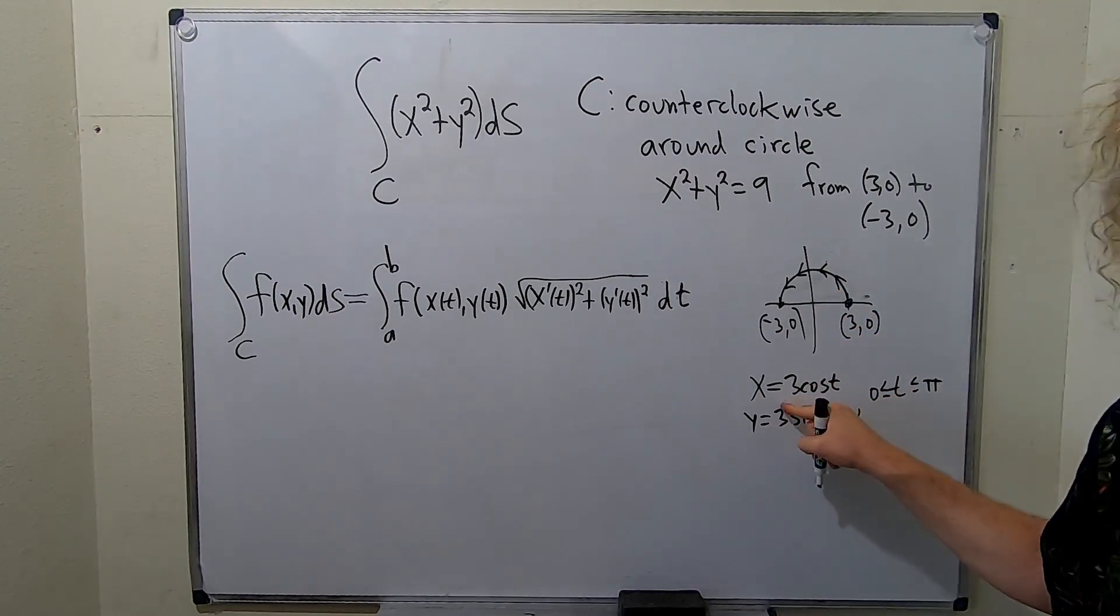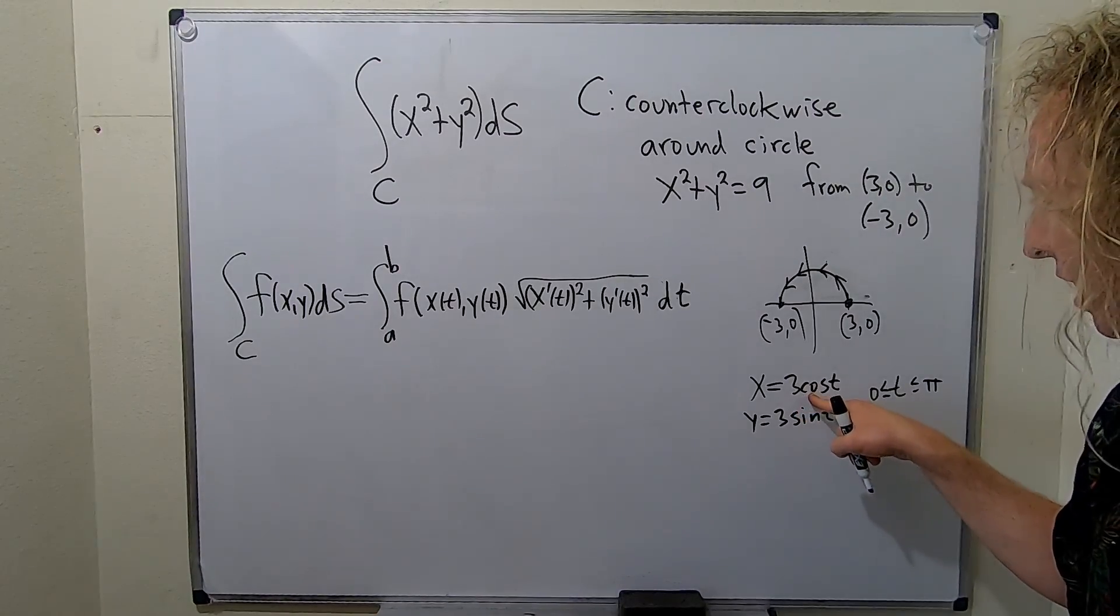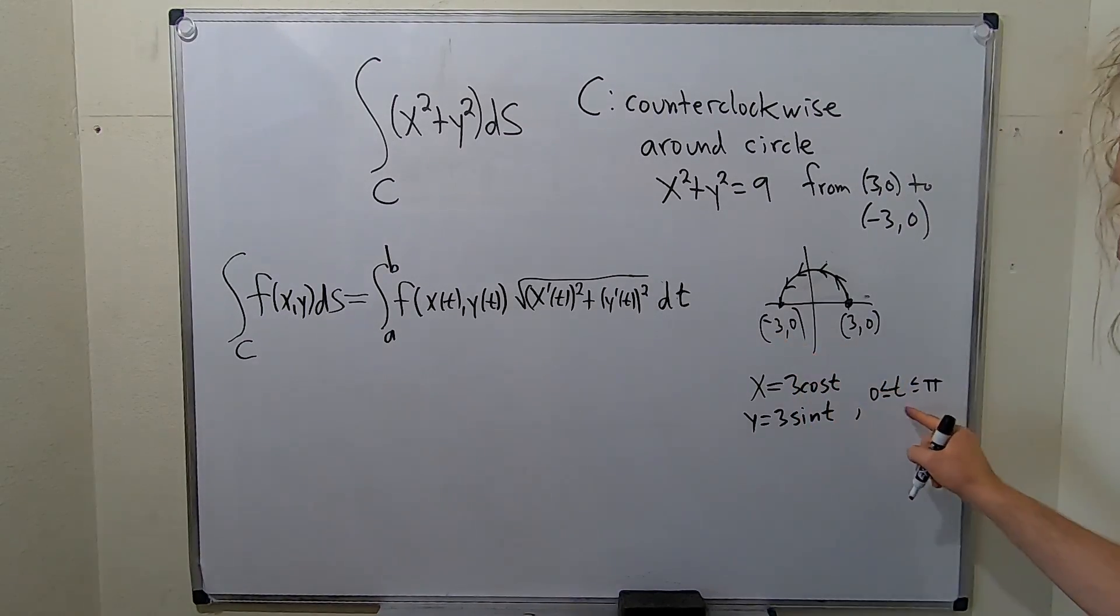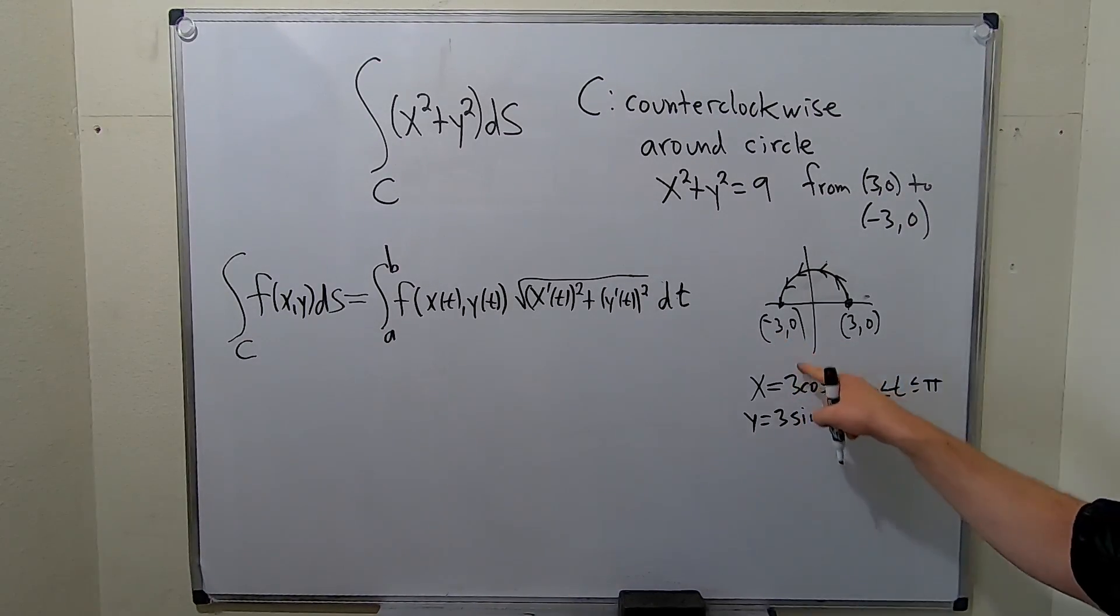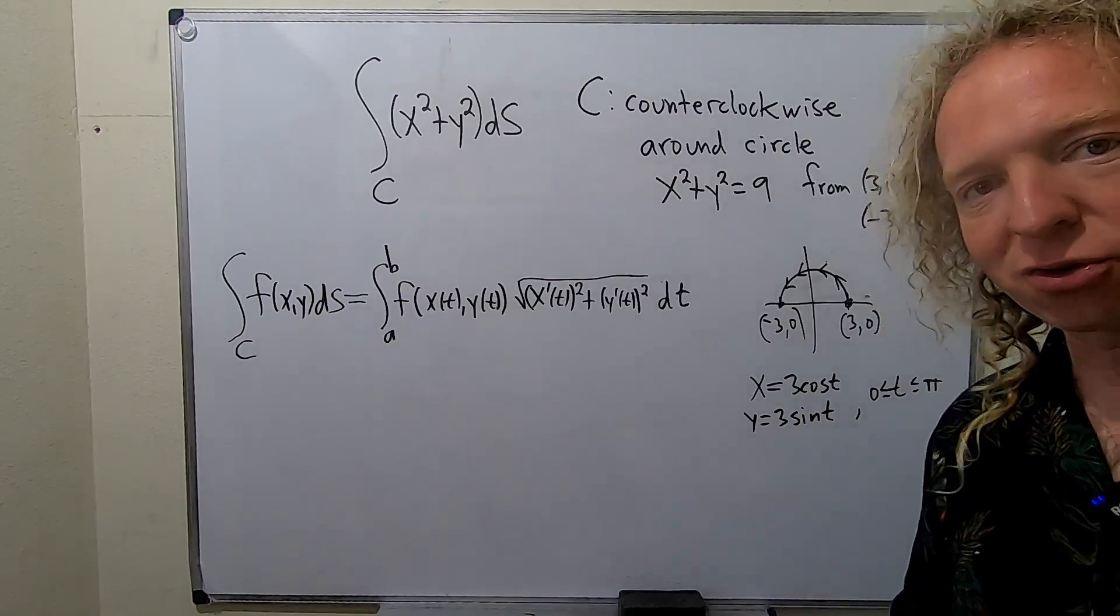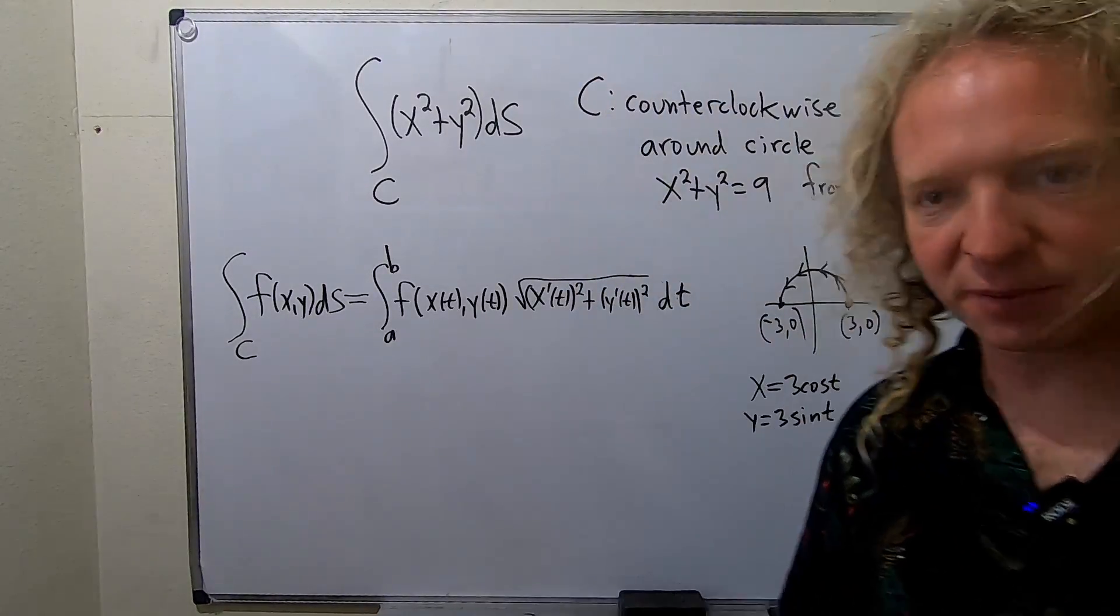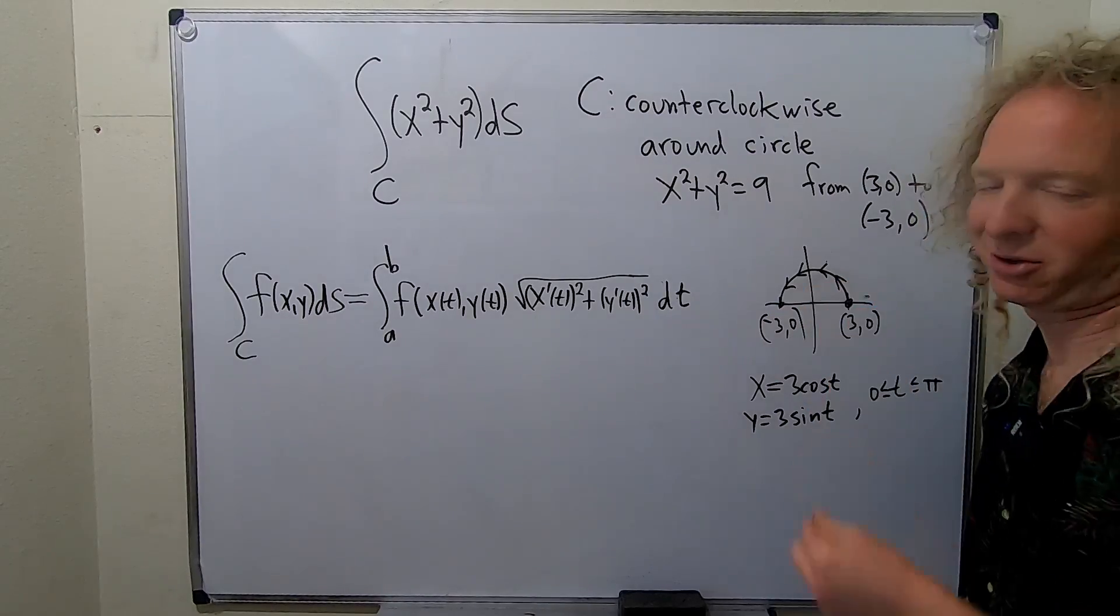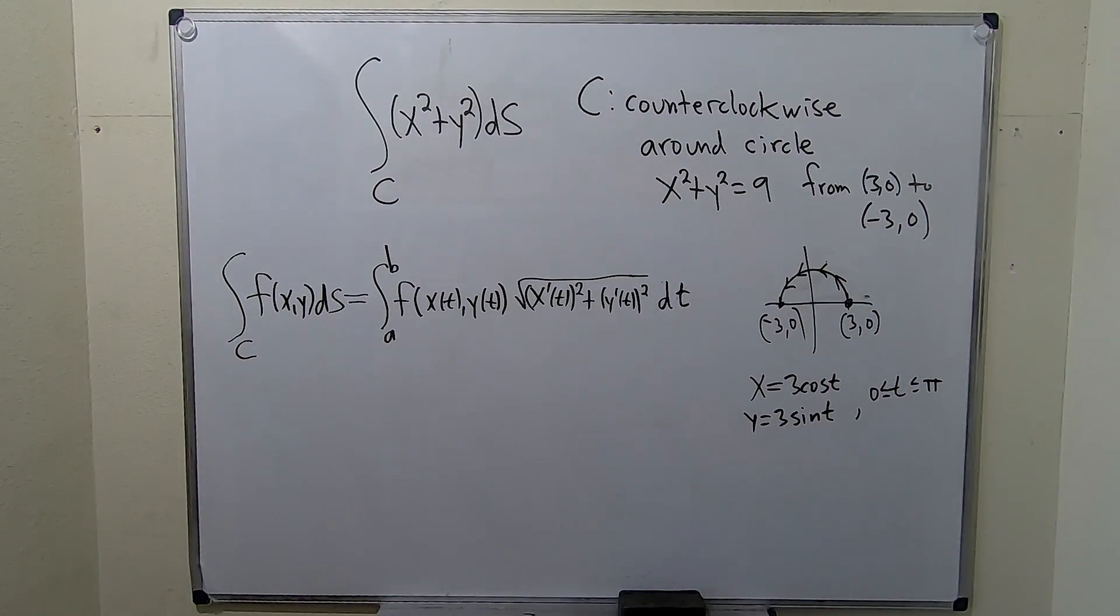If you plug in pi here, you get 3 cosine pi. Cosine of pi is negative 1, so you get negative 3. If you plug in pi here, you get 0, so you're here. So in general, to parametrize a circle of radius r centered at the origin, you can just use r cosine t and r sine t. It always works every single time.